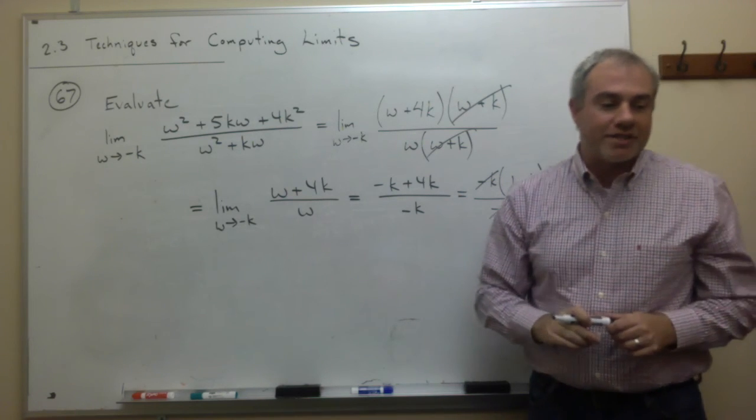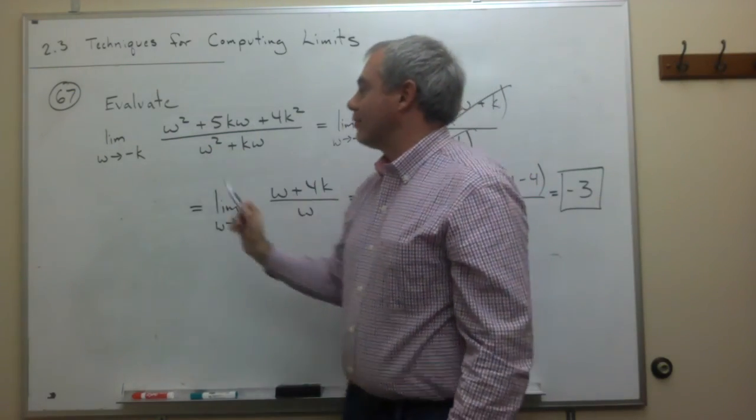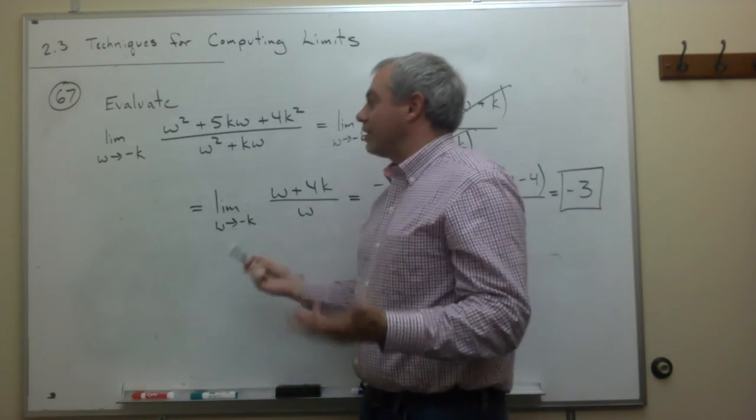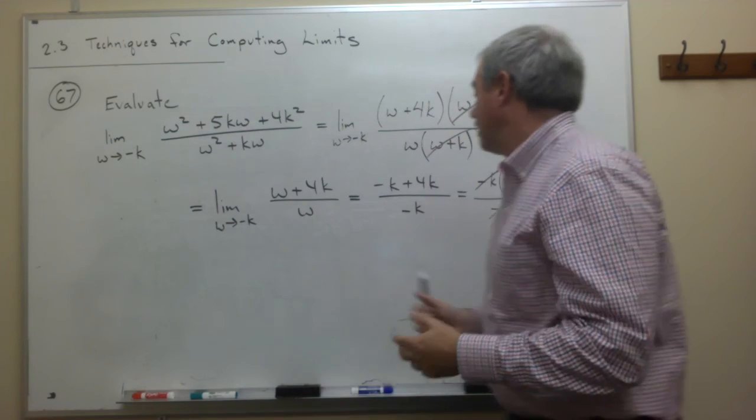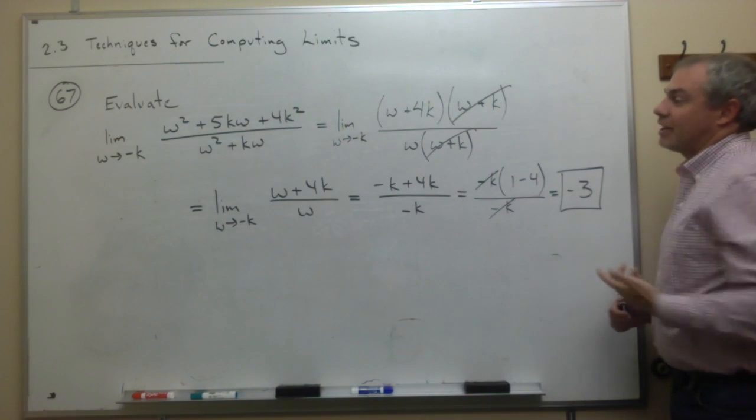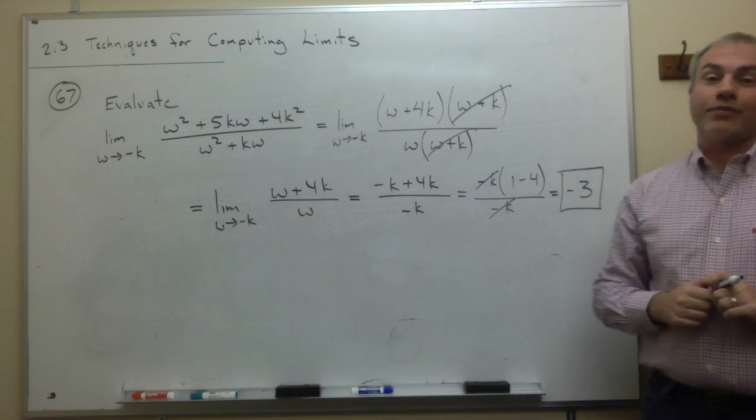Now, this is kind of remarkable in some sense, that we went through all this work with these w's and these k's, and it doesn't really matter what w and k are, except if k equals 0, this is kind of a mess. But as long as k is not 0, the limit that I get, no matter what the values of w and k, I get negative 3.